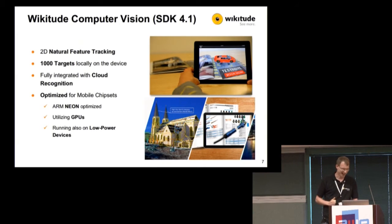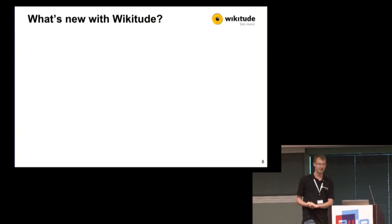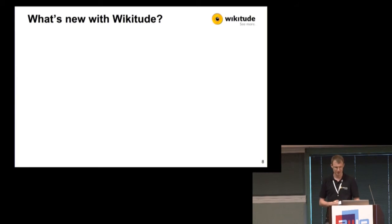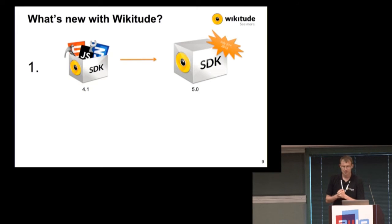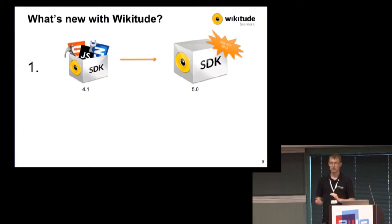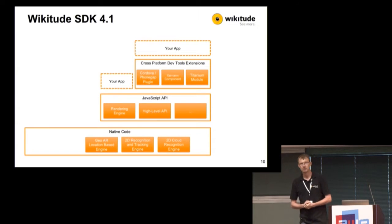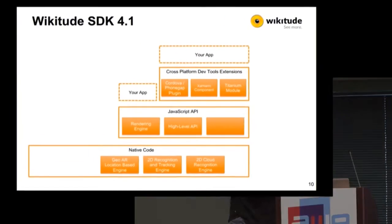Now for what's new with Wikitude. We're currently on Wikitude SDK 4.1 and we're moving to Wikitude SDK 5.0, releasing on July 21st, 2015. There are some really awesome new tools and additions to the platform in this release.